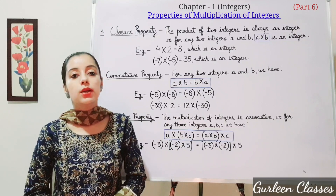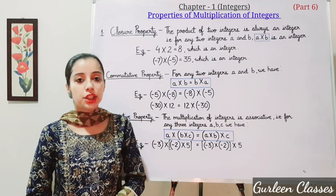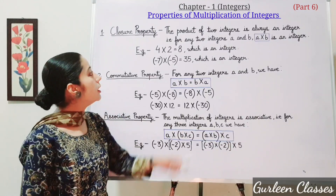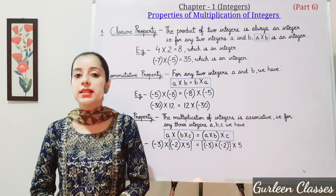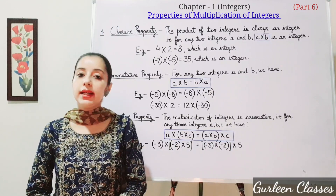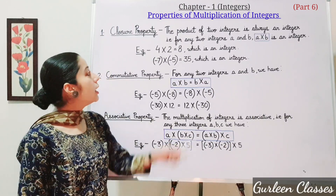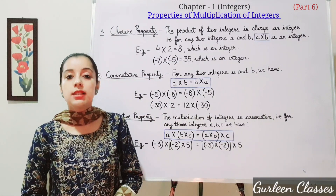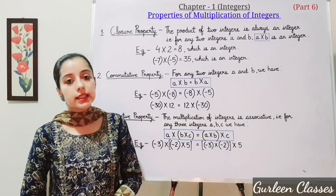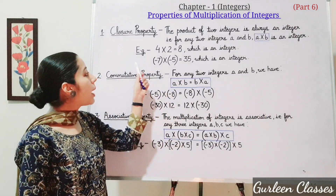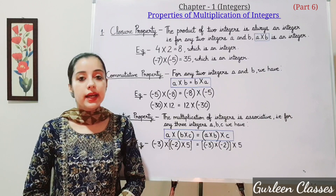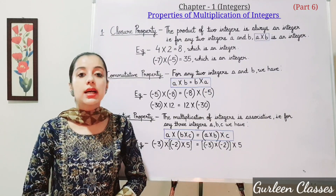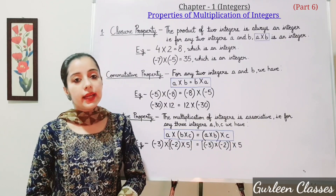The first property is the closure property of multiplication. The product of two integers is always an integer. That is, for any two integers a and b, a into b is an integer. Example: 4 into 2 gives product 8, which is an integer. Next example: minus 7 into minus 5 — both are negative integers — their result is 35, so 35 is also an integer.